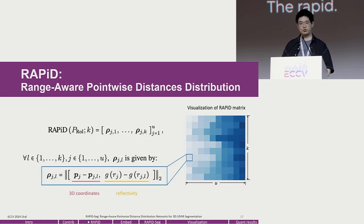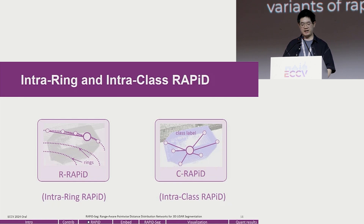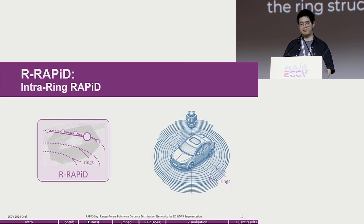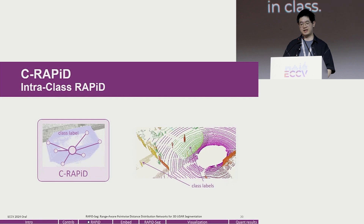The RAPID feature is a U×K matrix computing inter-point distances among every point. To enhance local context capture, we propose two specialized variants: intra-ring RAPID (R-RAPID) and intra-class RAPID (C-RAPID). R-RAPID focuses on the ring structure inherent in LiDAR data, reducing computational demand while leveraging structural characteristics. C-RAPID concentrates on extracting features within each semantic class, thereby maintaining fidelity in class embeddings.